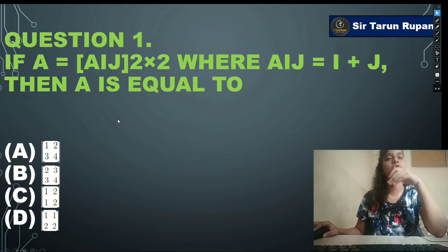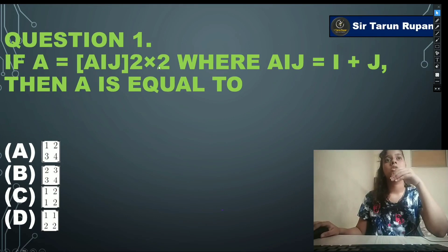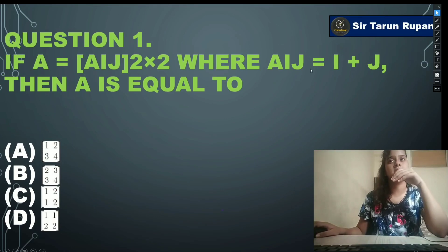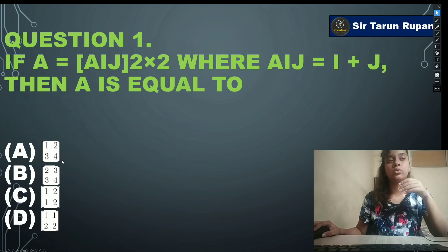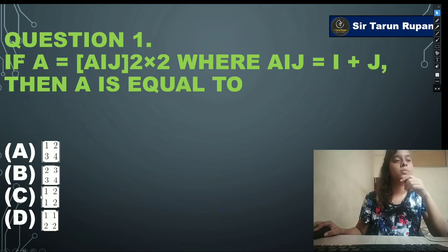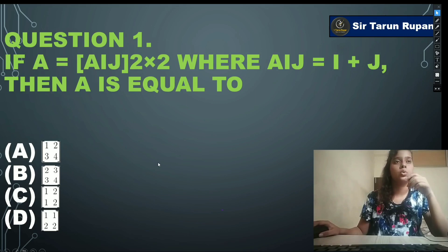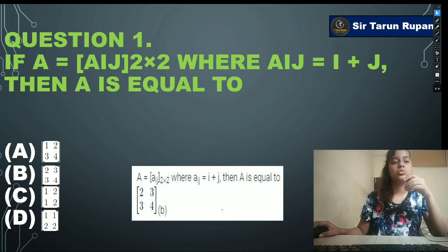Our first question: if A equals [a_ij] of order 2×2, where a_ij = i + j, then A is equal to — option A: [1,2;3,4], option B: [2,3;3,4], option C: [1,2;1,2], option D: [1,1;2,2]. Our correct answer is option B: [2,3;3,4].